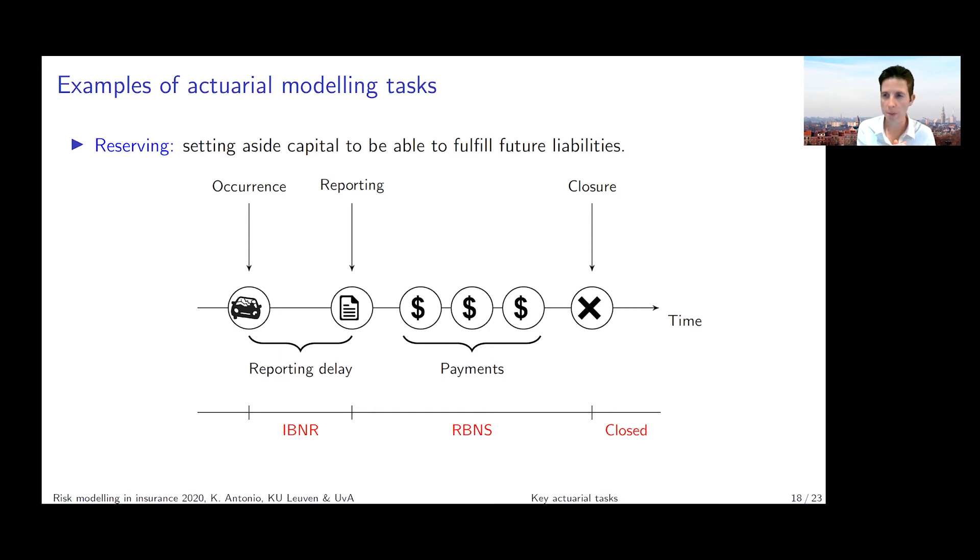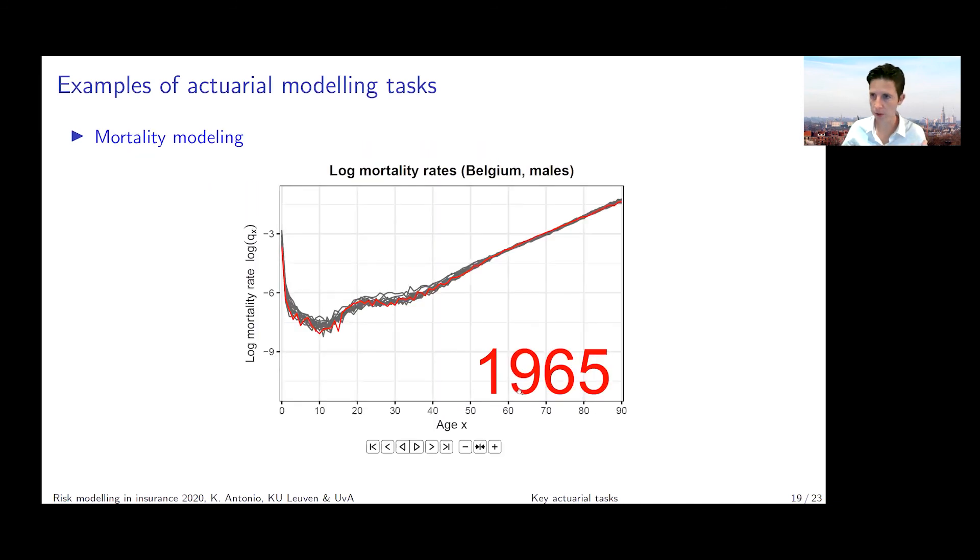That's what the reserving task is all about. Here again you see that it really matters to be able to build predictive models, again for how many payments are going to happen, how much time do we need until the claim finally settles, and also the size of events. When we need to do a loss payment, how big is this payment going to be? If we do this over all portfolios and across all open claims in our books, then we get the technical provision, and that's a very important element on the balance sheet of an insurance company at the liability side. We need to be able to get a good grip on what this number for the technical provision should become.